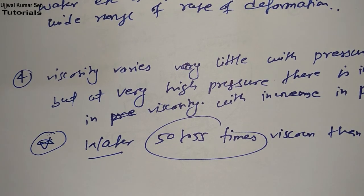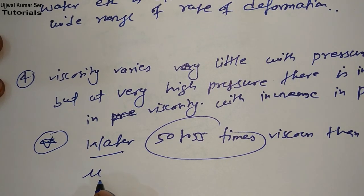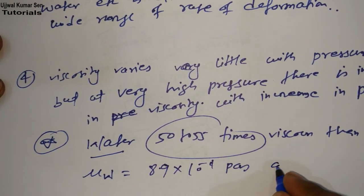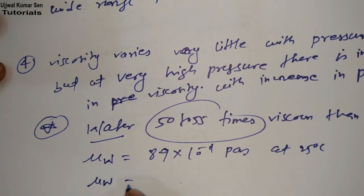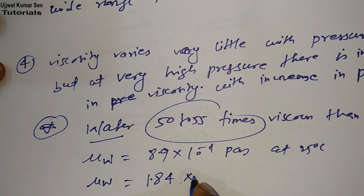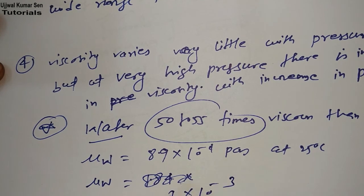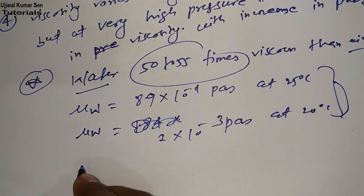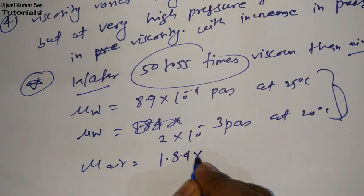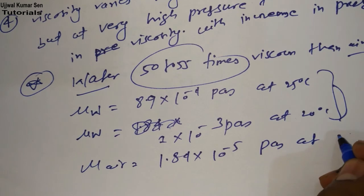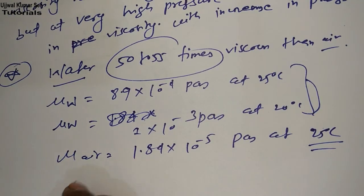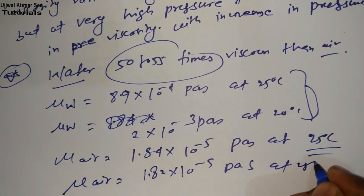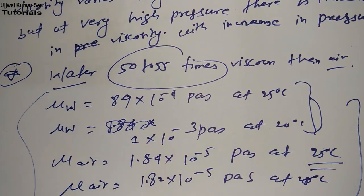Some important values: the coefficient of dynamic viscosity for water is 8.9×10⁻⁴ Pascal·second at 25°C, and 1×10⁻³ Pascal·second at 20°C. For air, it is 1.84×10⁻⁵ Pascal·second at 25°C, and 1.82×10⁻⁵ Pascal·second at 20°C. You must remember these values if you are preparing for any examination.